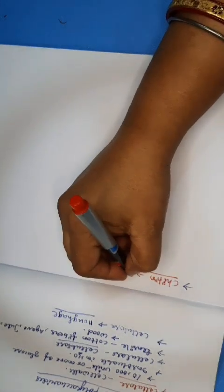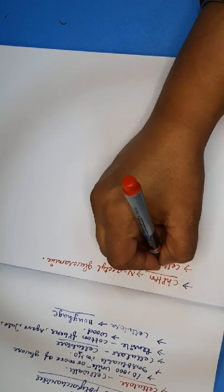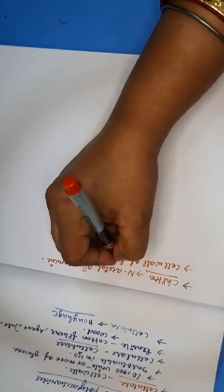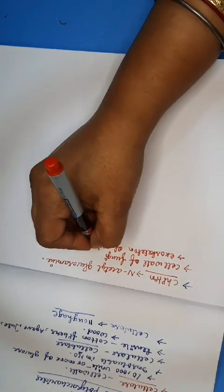The next structural polysaccharide is chitin — which brings to mind the exoskeleton of cockroaches, millipedes, centipedes, etc. Chitin is closely related to cellulose, structurally and functionally similar. It is a linear polymer of the amino sugar N-acetylglucosamine. Chitin is also present in the cell walls of fungi and in the exoskeleton of arthropods.